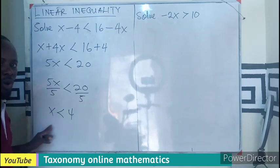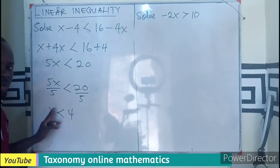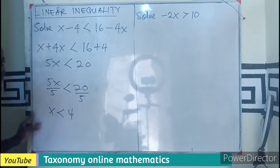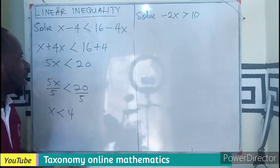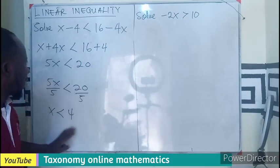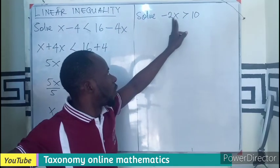So in this inequality, the value of x will be a range of numbers that are less than 4. So x could be 3, 2, 1, 0, all the way to make this inequality true. That is one aspect.